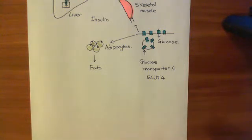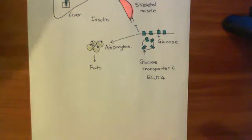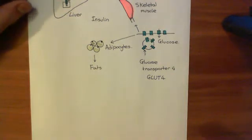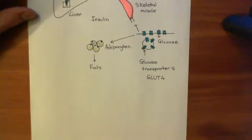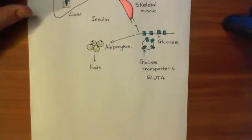Let's start by looking at the structure of the insulin receptor. The insulin receptor is basically a tetramer — it consists of four separate polypeptides joined together.